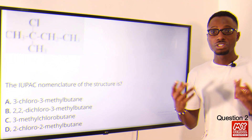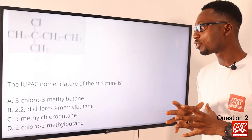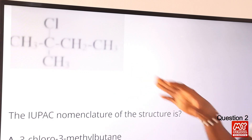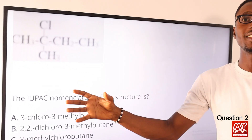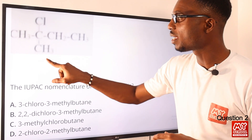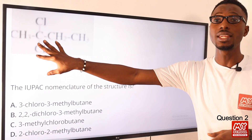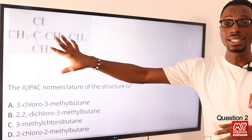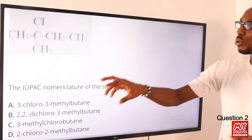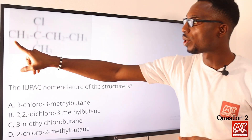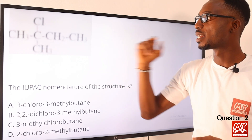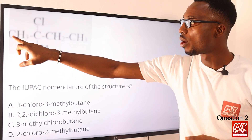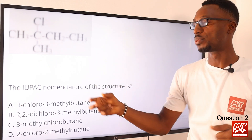Question two: the IUPAC nomenclature of the structure above is what? Looking at the structure, we have CH3, carbon, CH2, CH3. If you expand this structure properly, you need to follow the basic principles regarding the naming of compounds like this. If you count close to where we have all the branches, it is actually happening on the second carbon. On the second carbon we have chlorine and we have methyl. The longest carbon chain is one, two, three, four — so that is butane.